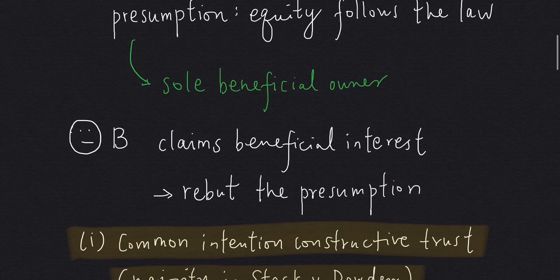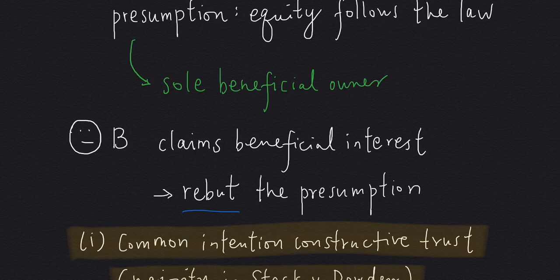But then comes B, who claims a beneficial interest. So B has to rebut the presumption of equity follows the law. There are two approaches. We have to bear in mind that whenever we face a legal problem in relation to trust, we have to justify why we prefer one approach over the other. For example, the common intention constructive trust approach has been endorsed by the Hong Kong court in the case of Prime Credit.